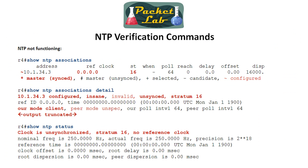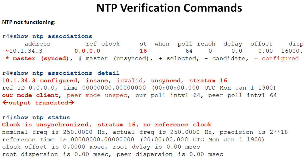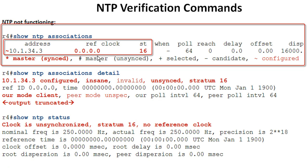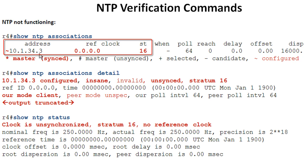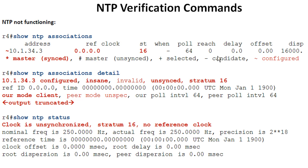Now let's look at an NTP setup that isn't working. We can see it's not synced — it's configured but we pointed it at a different router that isn't providing any clock. Things to look for: if the reference clock is quad-zero, that's bad. If you don't see master-synced or master-unsynced, that's bad. And stratum 16 means the device is not getting NTP — it's not providing NTP at all. All the offsets and reach values go to zero, and polling stays at 64 seconds because it's not getting information.